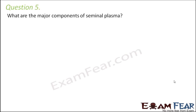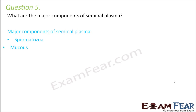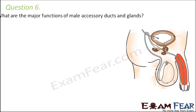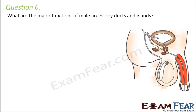Question five: what are the major components of seminal plasma? As sperms move through the male reproductive system, various components get added. The major components are spermatozoa, and mucus secretions from accessory glands such as the prostate gland, seminal vesicles, and bulbo-urethral gland. All these mix together to form the seminal plasma, which is rich in fructose, calcium, and certain enzymes.